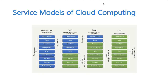Looking at the slide, we have four columns. The first is a traditional data center where all components — networking, storage, servers, virtualization, operating system, middleware, runtime libraries, data, and application — were managed by the company itself. A network admin handled routers and firewalls, a storage admin managed storage devices and LUNs, and everything up the stack was the administrator's responsibility.